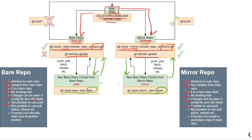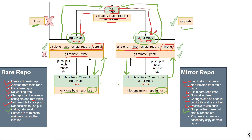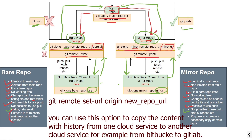Now, if you want to push the changes from the bare repository to the main repository using git push, it won't be possible. In the case of a mirror repository, pushing changes to the main repository will be possible using the git push command. Additionally, it is not possible to use pull, status, rebase, or similar commands in either the bare or mirror repository, because these repositories do not contain any working tree.